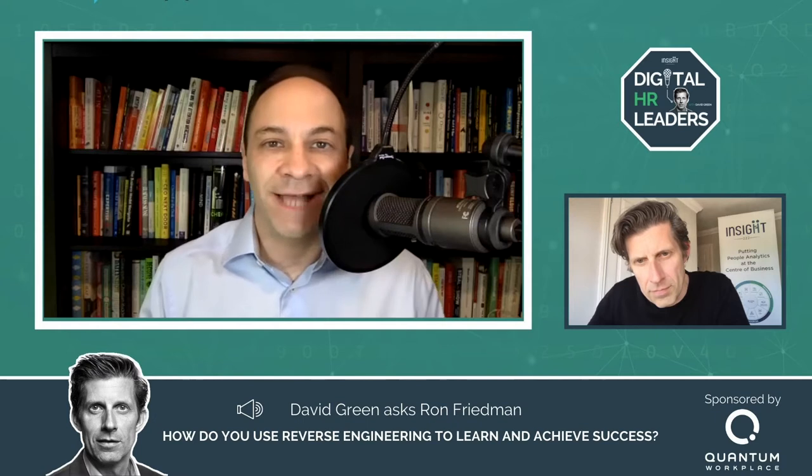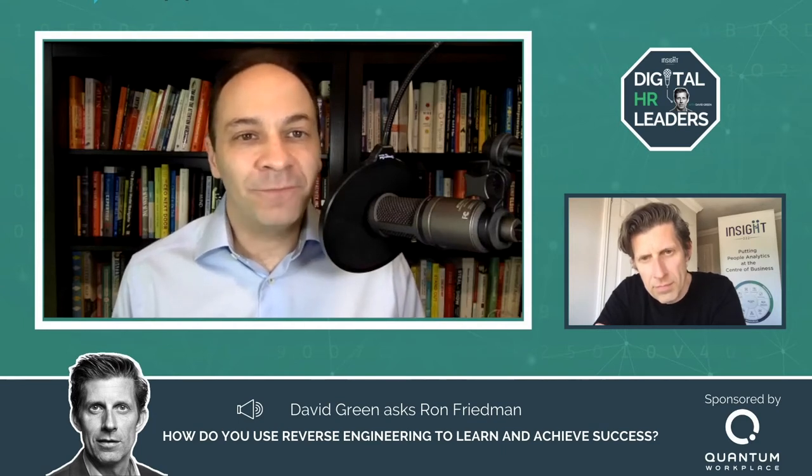What's less well known is that reverse engineering also explains how people like Malcolm Gladwell and Stephen King learned to write, how Claude Monet became a groundbreaking artist, and how Judd Apatow became one of the most successful comedy minds of our generation. Studying the best in the field turns out to be far more common than anyone realized.